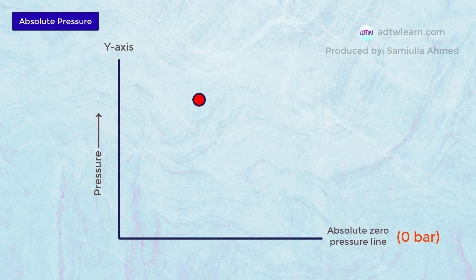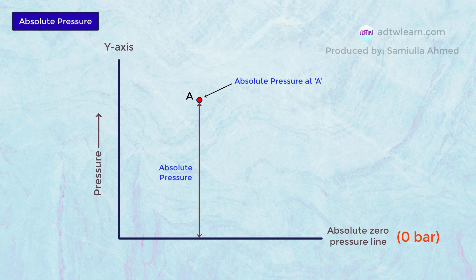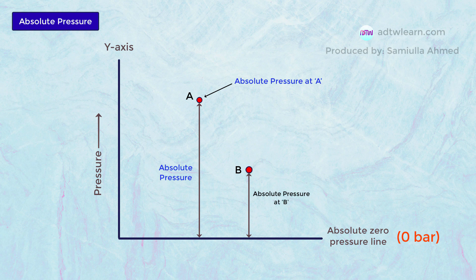Suppose if we measure pressure at point A from the absolute zero line, then the value of the pressure at point A is called the absolute pressure at point A. Consider another point B — if we measure the pressure value at point B from the zero line, this pressure is also called absolute pressure at point B.